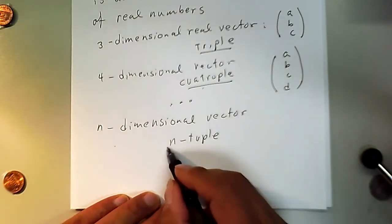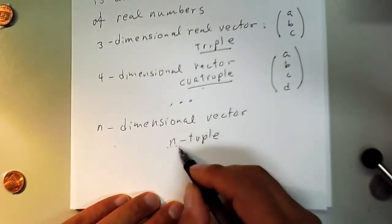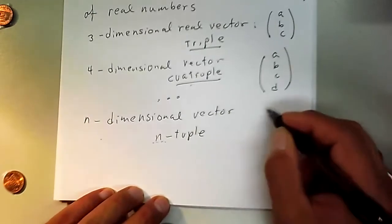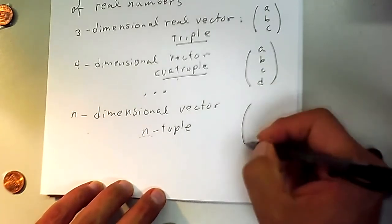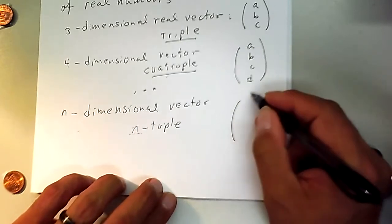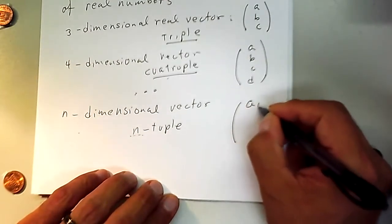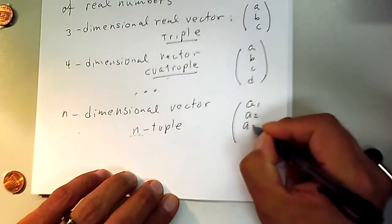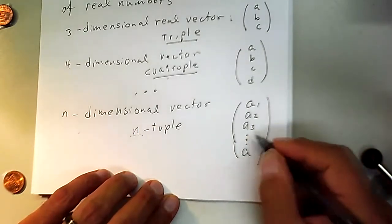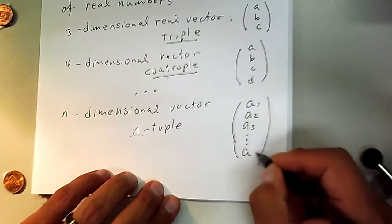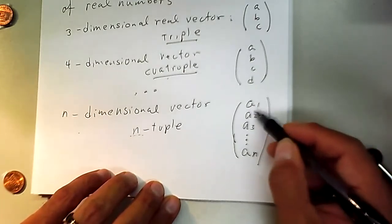So n takes the place of triple, quadruple, four-tuple, et cetera. It can be any generic n. Since it could be more than 26 elements, we don't know how many letters we need. When we don't know the number of coordinates — those elements are called the coordinates of the vector — we label them A₁, A₂, A₃, and so on, because we don't know how many we have. The last one will be A sub n. You can use any letter: B₁, B₂, B₃, and so forth.